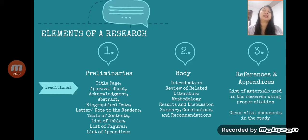The second part is the body, and this tells you whether the research is actually traditional or modern. The traditional contains five chapters: introduction, review of related literature, methodology, results and discussion, and the last one which is summary, conclusions, and recommendations.